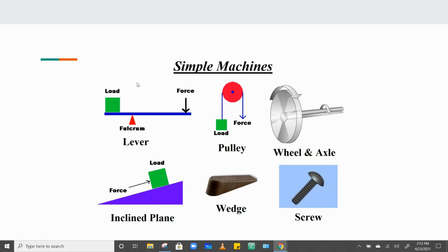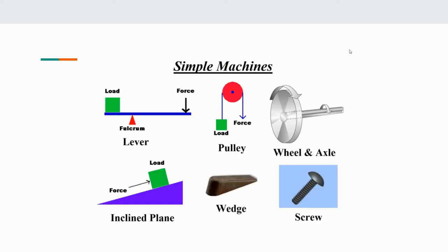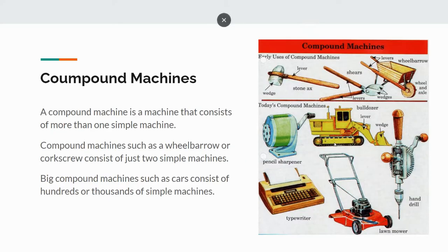The reason we learn about simple machines is because most large machines — compound machines — are a combination of more than one simple machine. So if you can understand each one of these simple machines and how they work, then we can understand how more complex machines work. Things like an axe have a wedge and a lever together. Shears have wedges and levers. A wheelbarrow has levers and a wheel and axle. A hand drill has a screw. Gears are an example of a wheel with teeth.